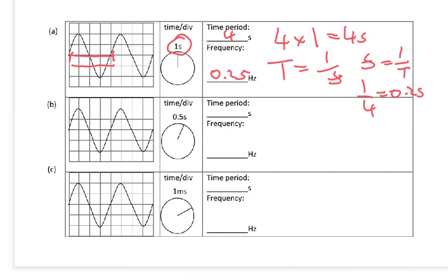Okay, let's have a look at the next one. Now this time, the time per division has been set to 0.5 seconds. So we've got one, two, three, four divisions for one wave. So four times 0.5 is equal to two seconds. So it takes two seconds for our wave to go across. So the frequency, again, is going to equal one divided by the time period, which is going to equal one over two, which is a half, which is 0.5 hertz.